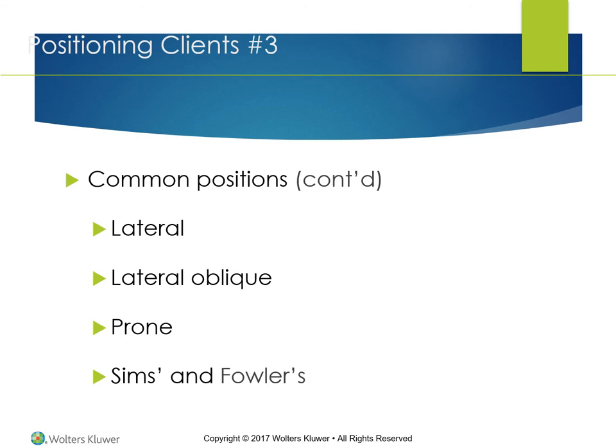In the lateral position (side-lying), foot drop is of less concern because gravity does not pull the feet down as it does when clients are supine. Unless the upper shoulder and arm are supported, however, they may rotate forward and interfere with breathing. In the lateral oblique position, a variation of side-lying, the client lies on the side with the top leg placed in 30 degrees of hip flexion and 35 degrees of knee flexion, with the calf of the top leg placed behind the midline of the body on a pillow. The back is supported and the bottom leg is in neutral position. This position produces less pressure on the hip than a strictly lateral position and reduces the potential for skin breakdown.